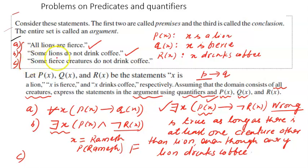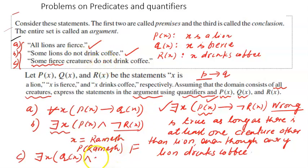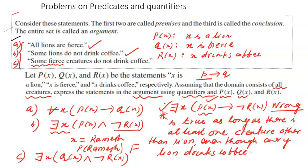The last statement is 'some fierce creatures do not drink coffee.' Again, I write: there exists x, qx and negation of rx. Here too, do not make the mistake of using implication. Whenever you use the existential quantifier, put the AND symbol between the two propositions.